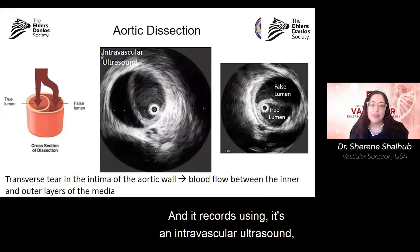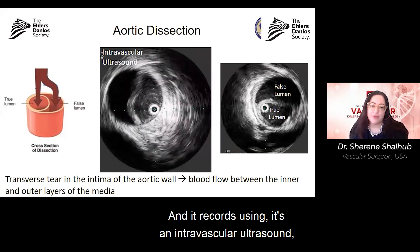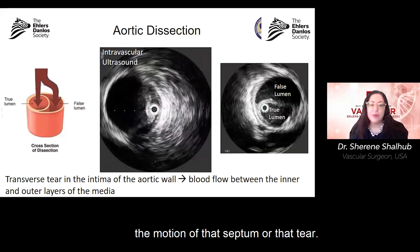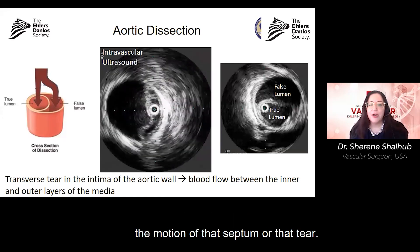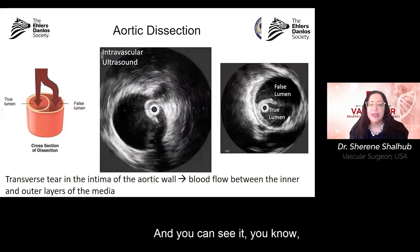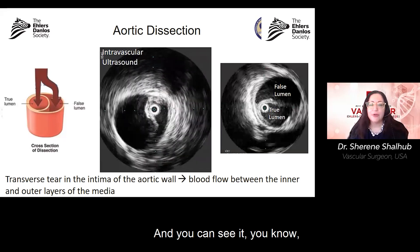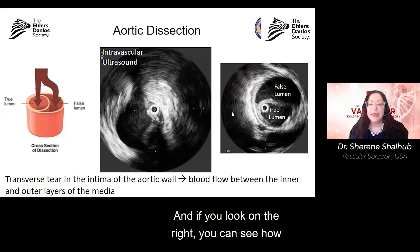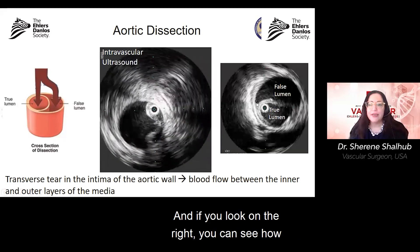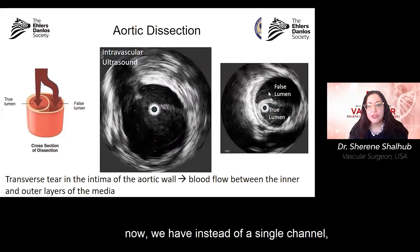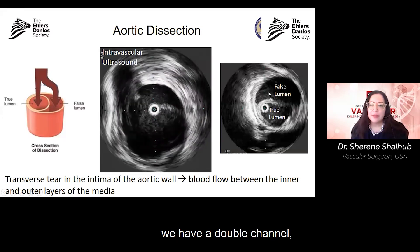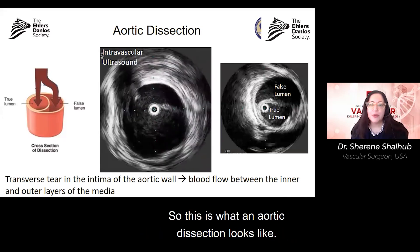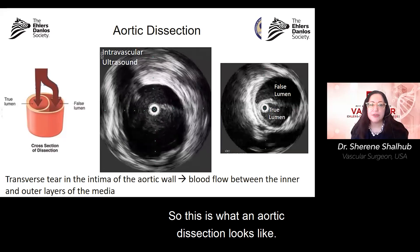The intravascular ultrasound records in real time the motion of that septum or tear, and you can see it pulsating with every heartbeat. Looking on the right, you can see how instead of a single channel, we now have a double channel — the false lumen and the true lumen. This is what an aortic dissection looks like.